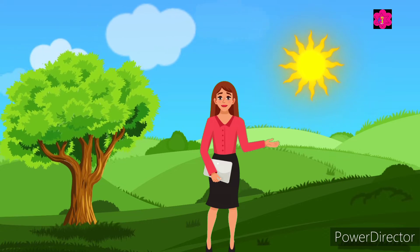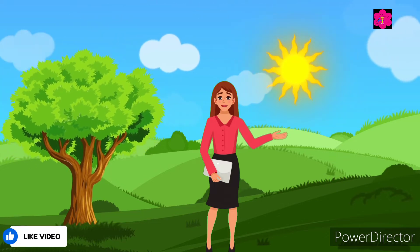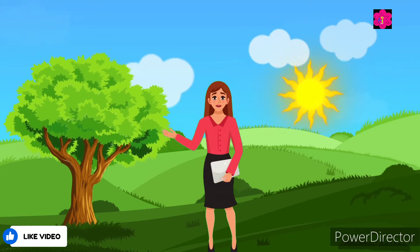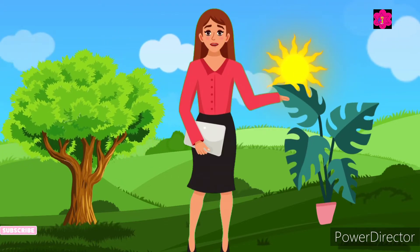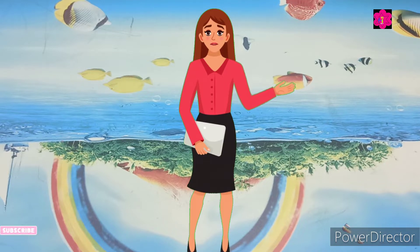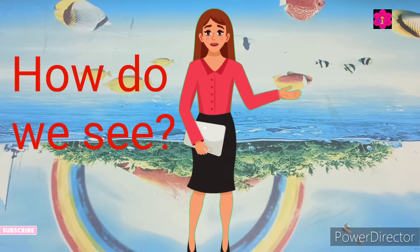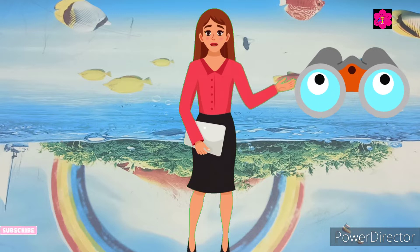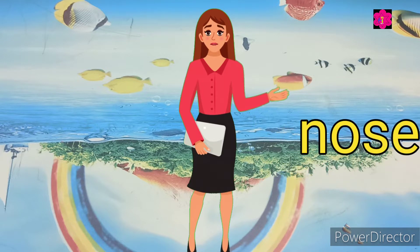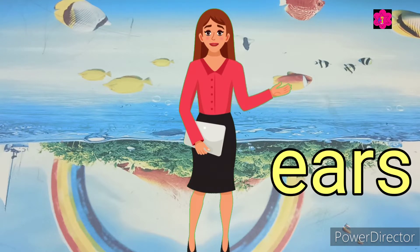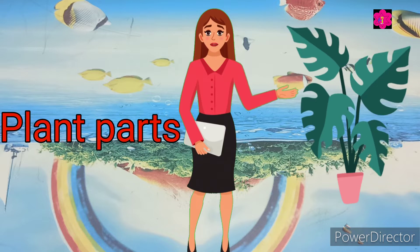Hey kids, how are you? Hope you all are fine. Today is your science class. Tell me, what is this? Yes, this is a tree and this is a plant. Can you tell me how do we see? Yes, with the help of eyes. How do we smell? Yes, with the help of our nose. So the nose, eyes, and ears are our body parts. Similarly, plants also have parts.